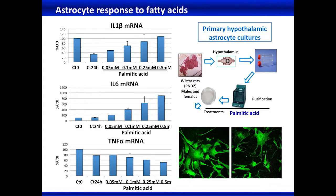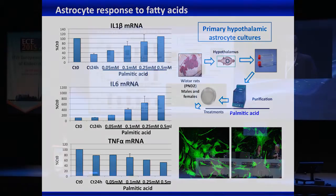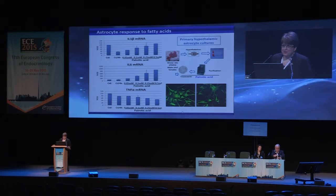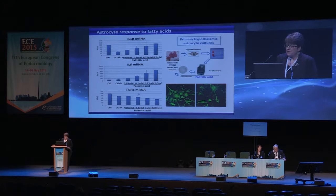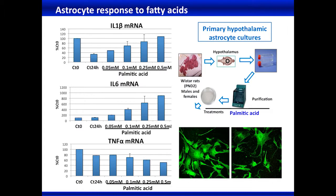This is a very classical response we see when we talk about glia — a rapid response that is usually protective, followed by a more prolonged response that can actually be harmful to surrounding cells. The early response was thought to be due to the diet itself. We used astrocyte cultures from two-day-old Worcester rats that were purified, double-labeled for GFAP (a marker of astrocytes) and IBA-1 (a marker of microglia), confirming no contamination by microglia — so we're working with highly enriched astrocyte cultures.